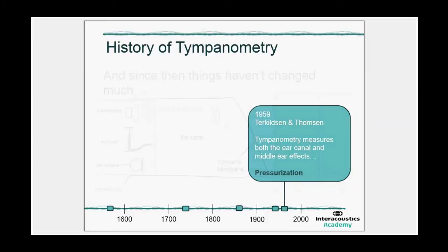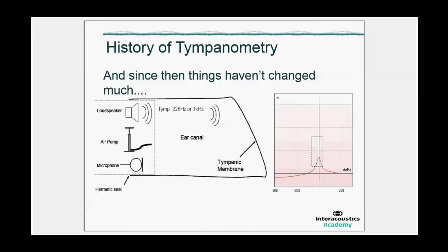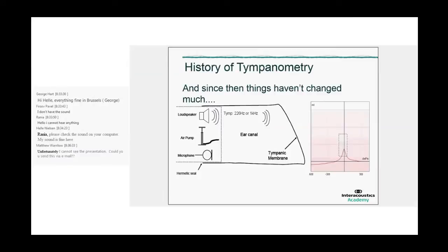So pressurization was added back then. And if you look at the tympanometer of that day, then the tympanometer did not change anymore between then and today. If you imagine what you see on the screen here is an ear canal in which we inserted a probe. The probe has a speaker to make a probe tone, which is typically 226 hertz, or for babies it is 1000 hertz. It has a pump so we can pressurize the ear canal, and it has a microphone to measure the response. This really didn't change much for the last roughly 50 years.